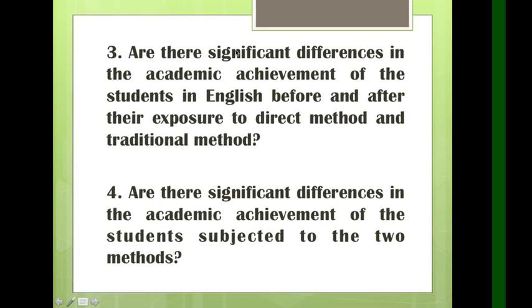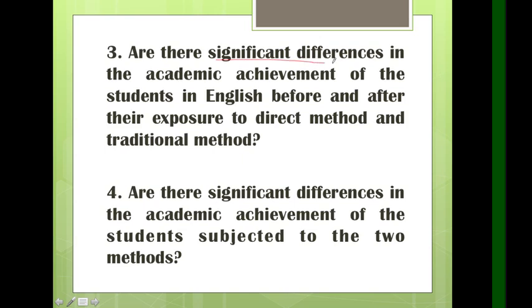Question three asks: are there significant differences in the academic achievement of students before and after their exposure to direct method and traditional method? Since it asks for significant difference and we have two methods, we use t-test. The question specifies before and after — comparing a pre-test and post-test — so this is a paired sample t-test. Question four also asks about significant differences, but it compares students subjected to different methods — separate populations — so we use independent sample t-test.